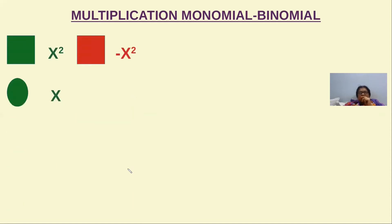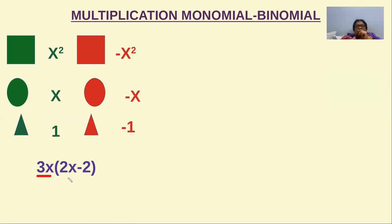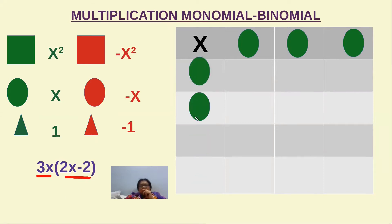Now multiplication of a monomial with a binomial. Using the same flashcards, we multiply 3x (a monomial) by 2x minus 2 (a binomial). There are 3 x's, so we take three green colored circle shaped flashcards. For the binomial, we have plus 2x and minus 2, meaning two minus 1 flashcards.